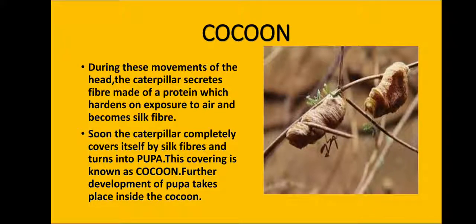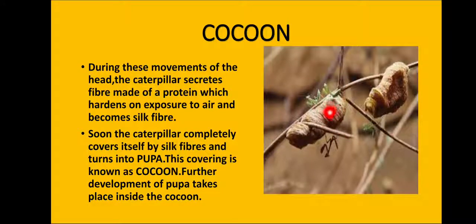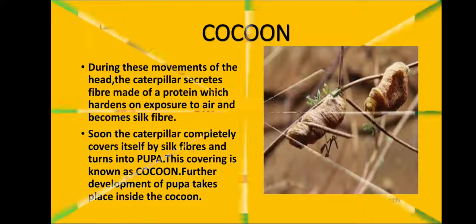The caterpillar then turns into a pupa. This stage is called pupa, and the covering around it is known as a cocoon. All further development of the pupa takes place inside the cocoon.